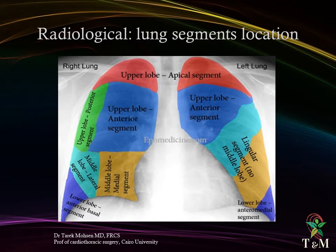On the right side, the middle lobe segments can be seen including the medial and lateral segments, and only a small part of the lower lobe can be seen at the right costophrenic angle. On the left side, the lingular superior and inferior segments can be seen, and a small part of the left lower lobe at the left costophrenic angle can be seen.